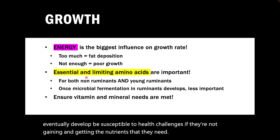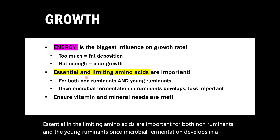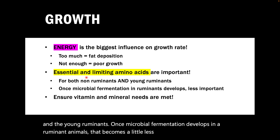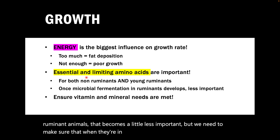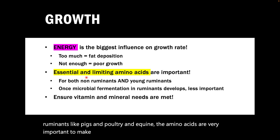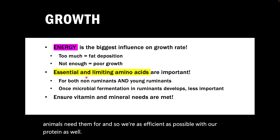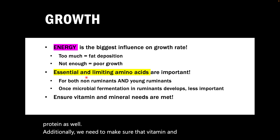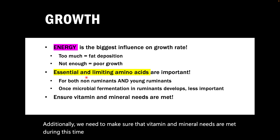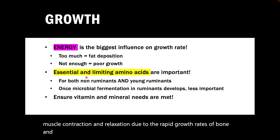Essential and limiting amino acids are important for both non-ruminants and young ruminants. Once microbial fermentation develops in ruminant animals, that becomes a little less important, but for animals in early development, or for non-ruminants like pigs, poultry, and equine, amino acids are very important. Additionally, we need to make sure that vitamin and mineral needs are met during this time, particularly those associated with bone development and muscle contraction and relaxation, due to the rapid growth rates of bone and muscle early in the growth curve.